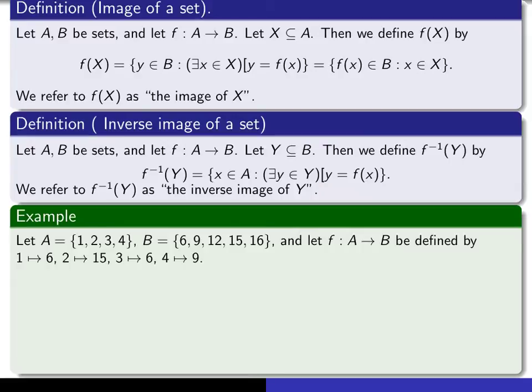So here's a simple example for you. We'll do a slightly more difficult one in the subsequent lectures. Let's take A to be this discrete set, 1, 2, 3, 4. B is the set here, and I'm going to define a function from A to B. 1 maps to 6, 2 maps to 15, 3 maps to 6, and 4 maps to 9.